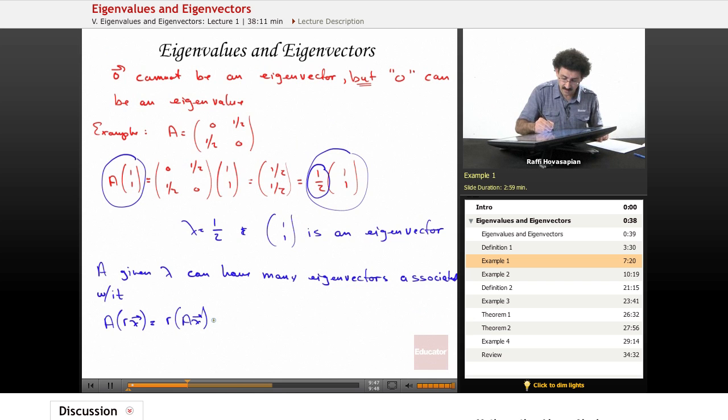A times x is equal to r times lambda x, because A of x is equal to lambda x, right? Lambda is an eigenvalue. Well that's equal to lambda times r of x. So notice what I've got: A times r of x equals lambda times r of x. So if I have a given vector x, any scalar multiple of x is also an eigenvector associated with that eigenvalue.